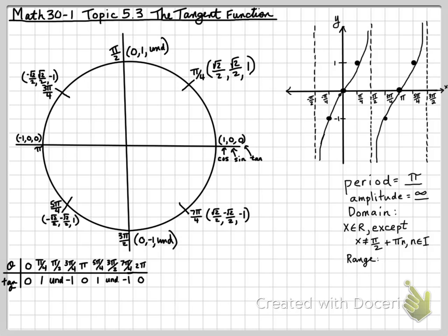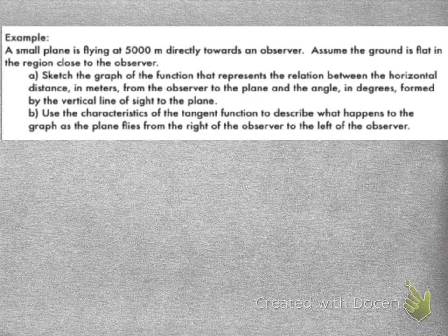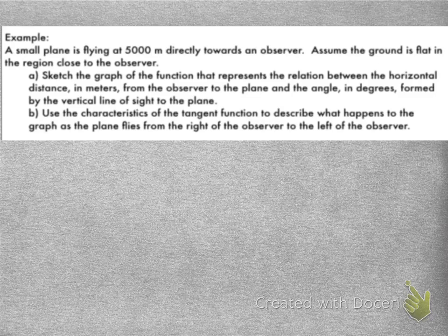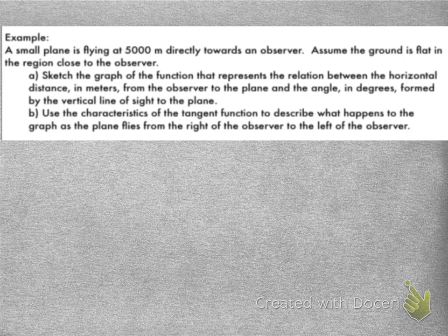The range now is going to be the set of all the y values, so that'll be y is any real number. And we're done. In our next example, a small plane is flying at 5,000 meters directly towards an observer. Assume the ground is flat in the region close to the observer. Sketch a graph of the function that represents the relation between the horizontal distance in meters from the observer to the plane and the angle in degrees formed by the vertical line of sight to the plane.